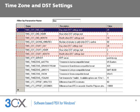Finally, the phone will need to know the start and end dates for daylight savings time and the number of minutes to add when it is in effect. The variables for the dates are timeDSTStartMonth, timeDSTStartDay, timeDSTEndMonth, and timeDSTEndDay.